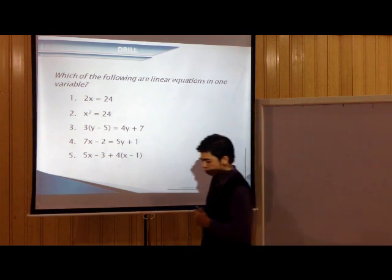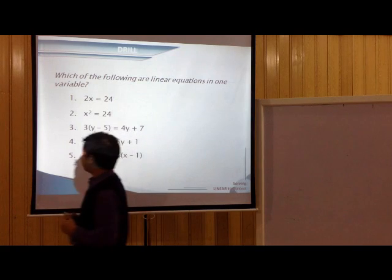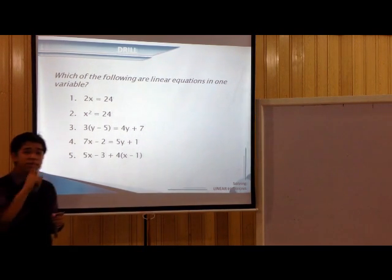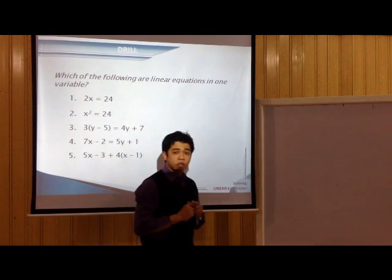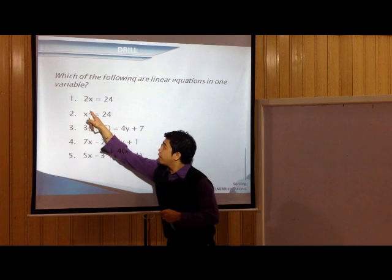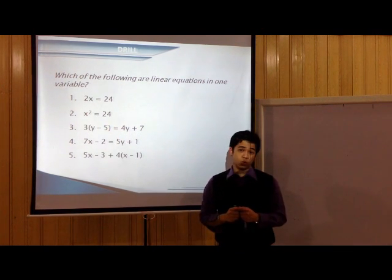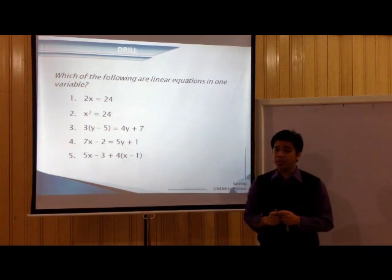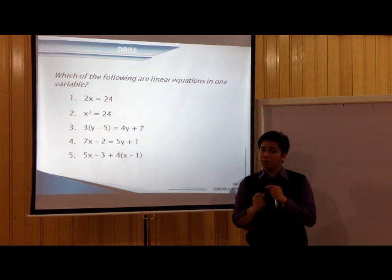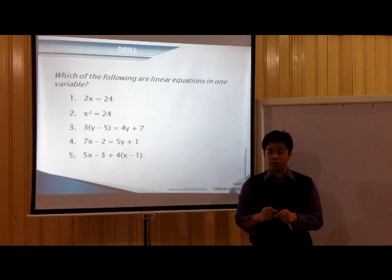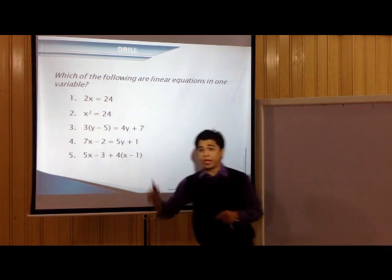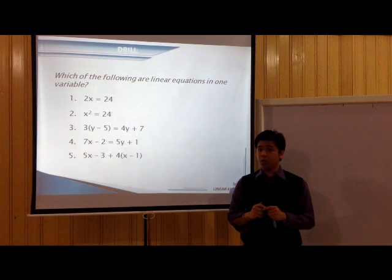Now take a look at number 2. Do you see one variable here? X squared equals 24? Yes, we only see one variable there. The problem is, it is not a first degree equation. As you can see, the exponent here is 2. We said that a linear equation has the highest exponent in the variable equal to 1. In this case we have 2, so we cannot consider that a linear equation in one variable.